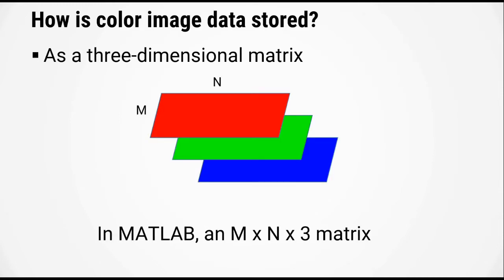So how is color image data stored? It is stored as a three-dimensional matrix. The three-dimensional matrix has, in this case, only three z-planes that correspond to the intensity in the red channel, the intensity in the green channel, and the intensity in the blue channel. In MATLAB, this would be a matrix of size M by N by 3.